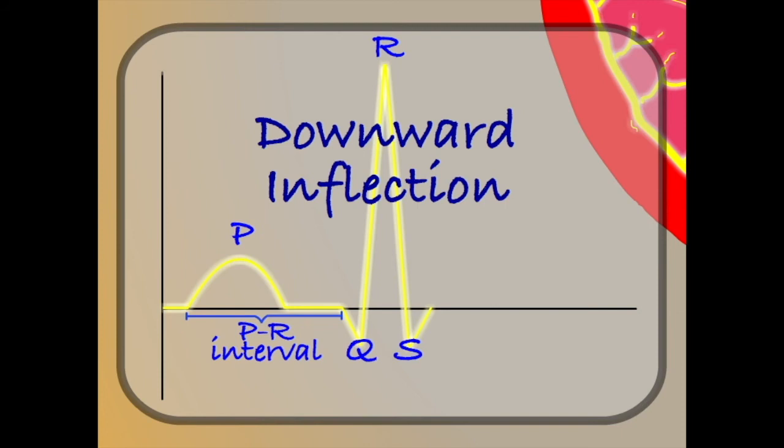Together, the Q, R, and S represent the contraction of the ventricles. They are collectively referred to as the QRS complex.